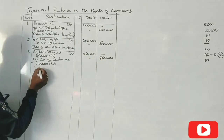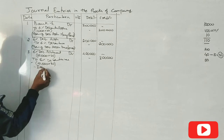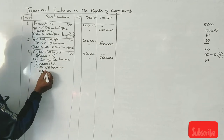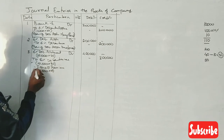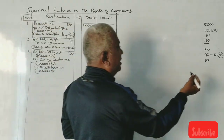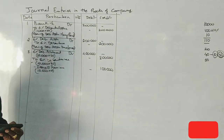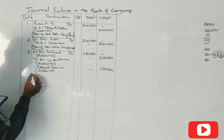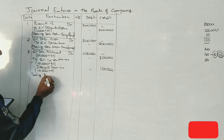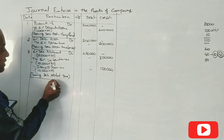Also, issue at premium — Securities Premium Account debit: 10,000 into ₹10 equals ₹1 lakh. So the allotment entry splits: ₹3 lakhs to debentures account and ₹10 per debenture is issue at premium account. Narration: Being debenture allotment money due, including premium.